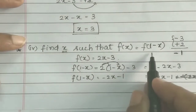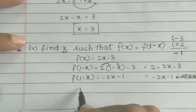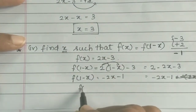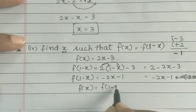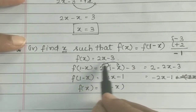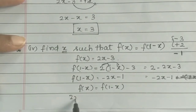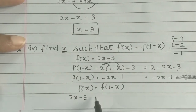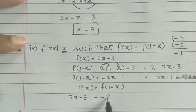Now, applying the given condition f(x) = f(1 - x). We have f(x) = 2x - 3, and f(1 - x) = -2x - 1. So setting them equal: 2x - 3 = -2x - 1.